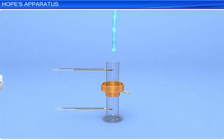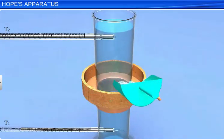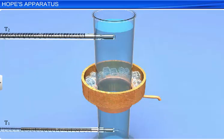Now, the cylindrical jar is filled with water. The cylindrical trough at the central portion of the jar is filled with the freezing mixture of ice and common salt.